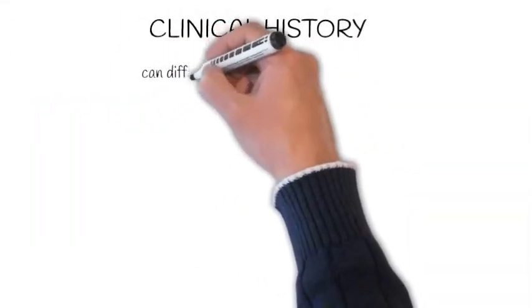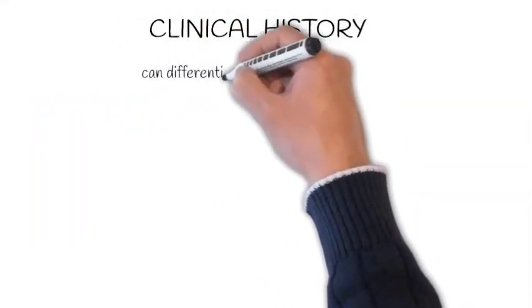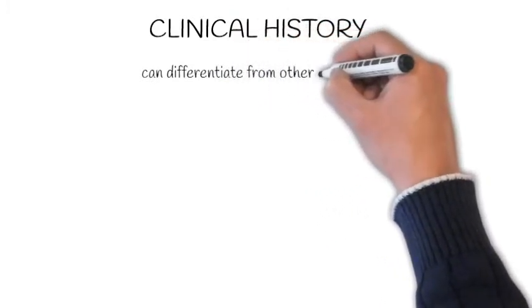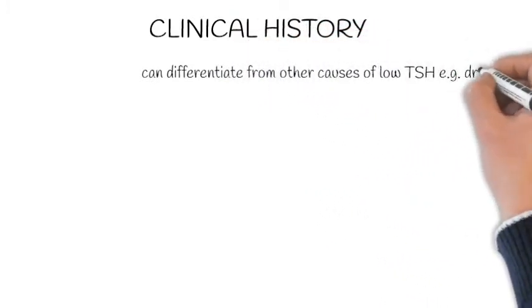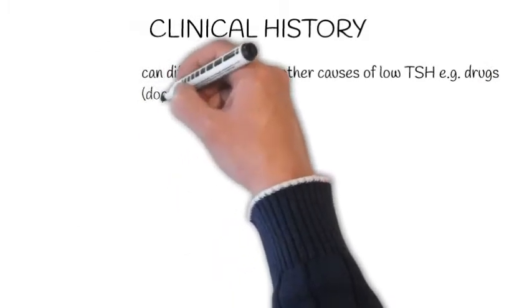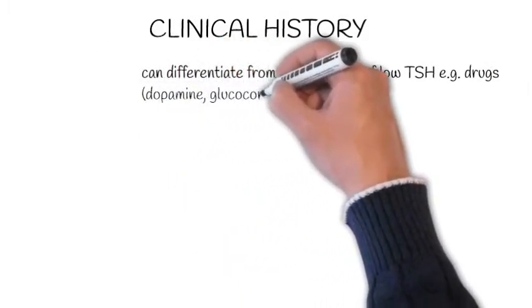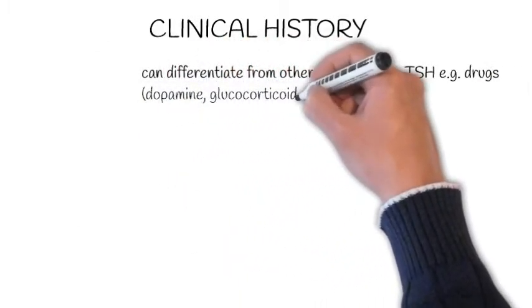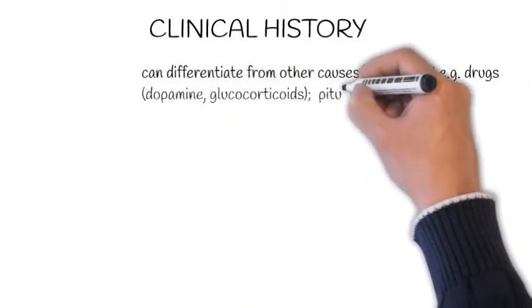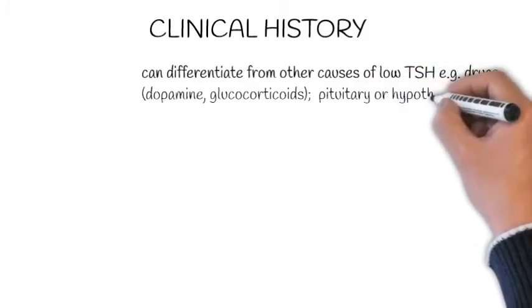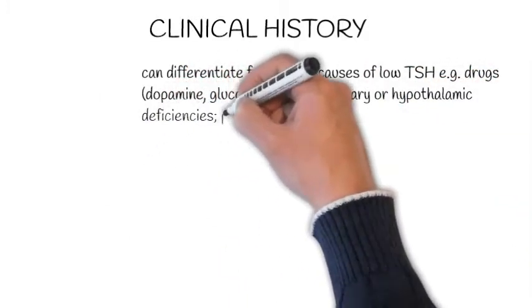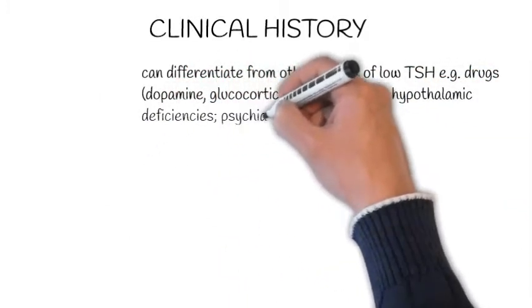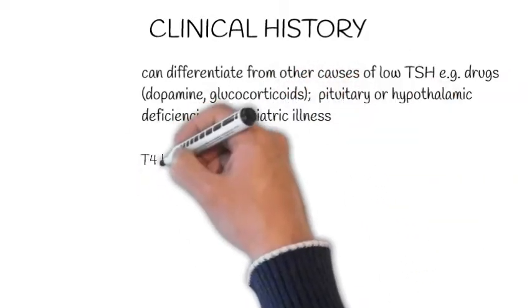Diagnosis. A clinical history can distinguish subclinical hypothyroidism from other causes of low TSH not related to thyroid overactivity. For example, the use of certain drugs such as dopamine or glucocorticoids, pituitary and hypothalamic deficiencies, and psychiatric disease such as affective disorders.